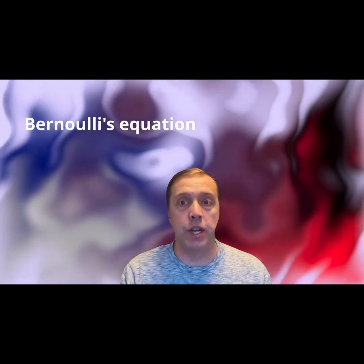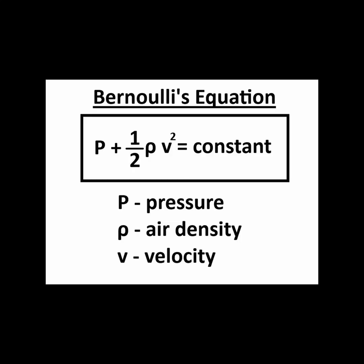There's a link between the velocity of the air mass and the pressure it experiences. This relationship is captured in a formula called Bernoulli's equation. It shows that the pressure plus one half of the air density times the square of the air velocity is constant. Notice that if the velocity of the air goes up, like when the air passes over the top of the airfoil, that means the air pressure must go down to satisfy the equation.